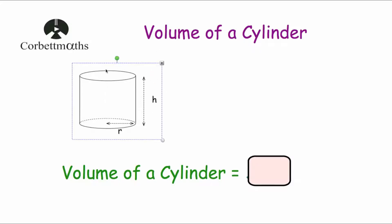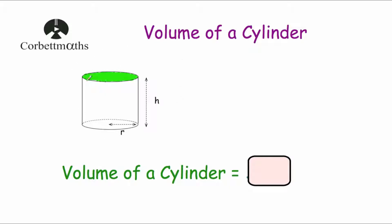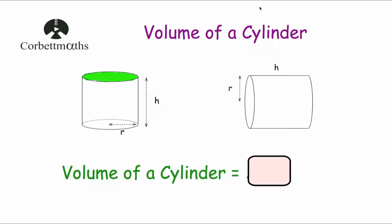So if I had a cylinder and I wanted to find its volume, I would find the area of the circle by doing pi r squared, and then I would just multiply by how tall the cylinder is, and that will give me the volume. Likewise, if the cylinder was on its side and I wanted to find its volume, I would find the area of the cross section — the area of that circle — and then multiply by how long the cylinder is. So to find the volume of a cylinder, we do pi r squared to get the area of the circle, and then we just multiply it by the height, h.